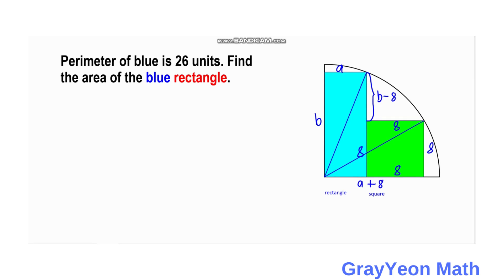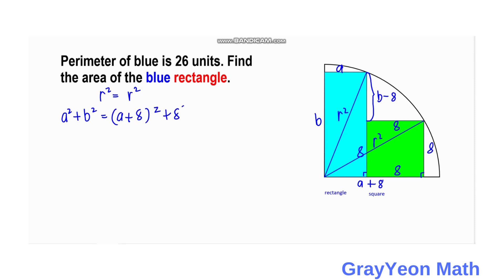Since these two radii are equal, r² equals r². For the first radius, looking at the blue region, we have A² plus B² equals r². For the second radius, using the corner of the square, we have (A plus 8)² equals r². So A² plus B² equals (A plus 8)².